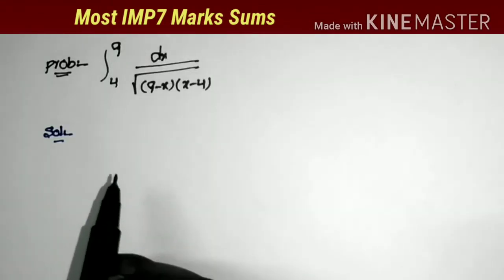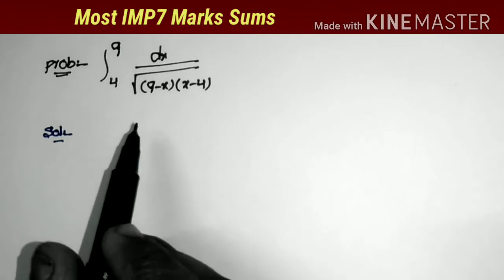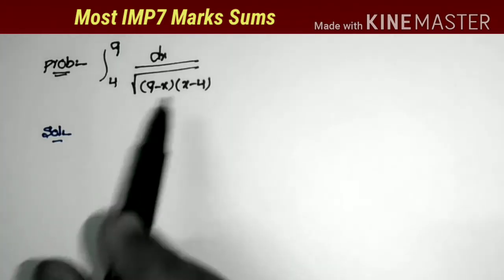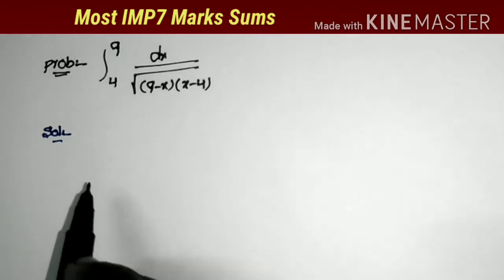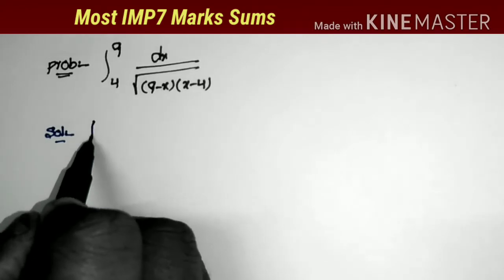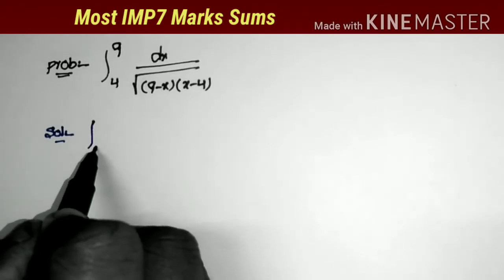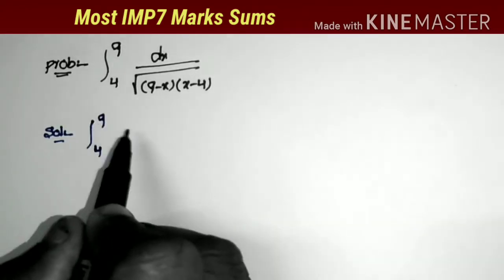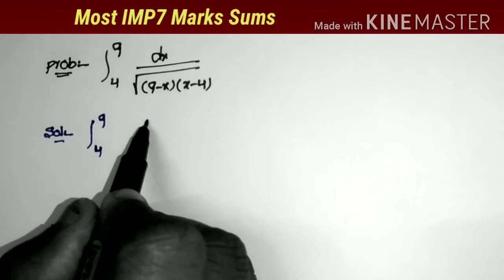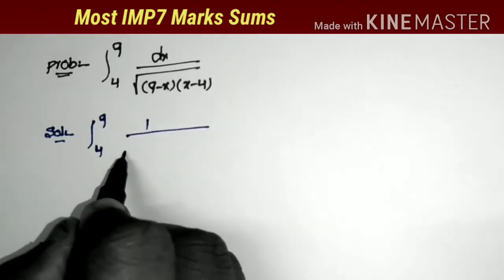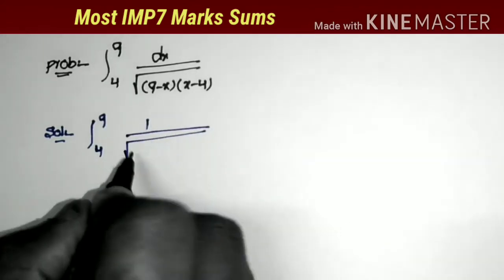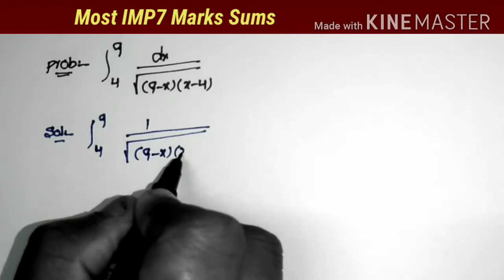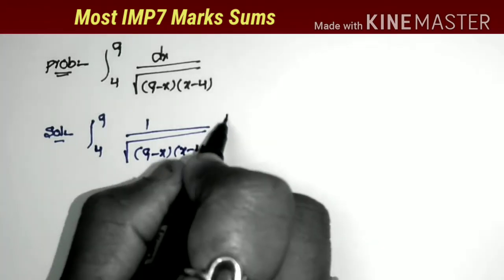First problem: integral from 4 to 9 of dx divided by square root of (9 minus x) times (x minus 4). Now, how to find the integration of this question — this is an important problem. The given problem is integral from 4 to 9 of 1 by square root of (9 minus x)(x minus 4) dx.